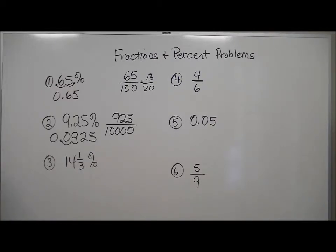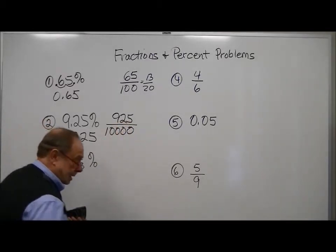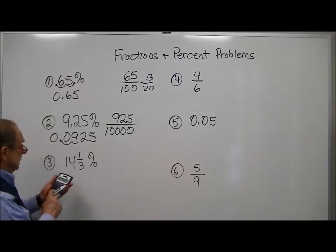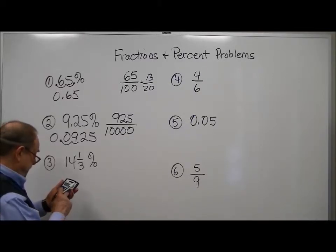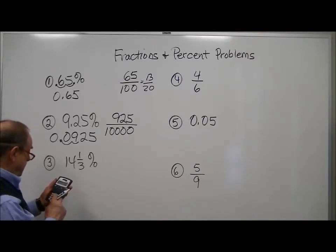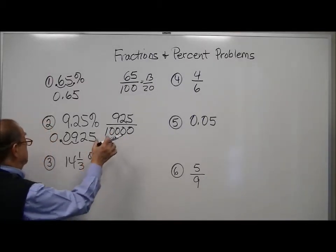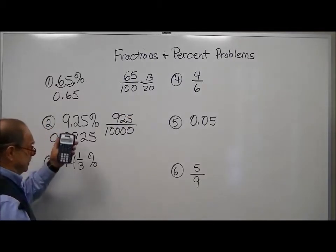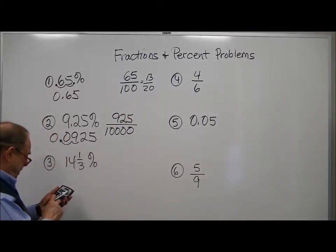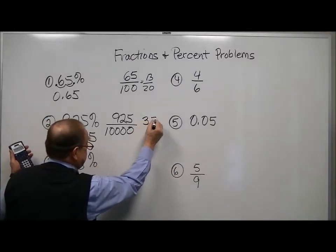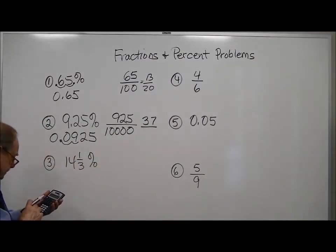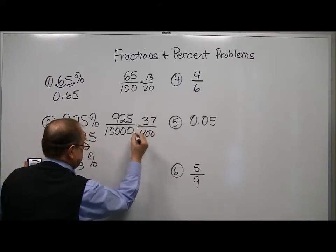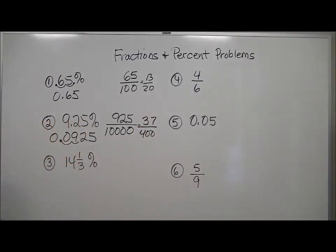Now you can start taking a five out of here. I brought my calculator along. So 925 divided by five... Actually, as I look at this, I can take a 25 out of there. 925 divided by 25, that's going to be 37 and out of 10,000, that's going to be 400.